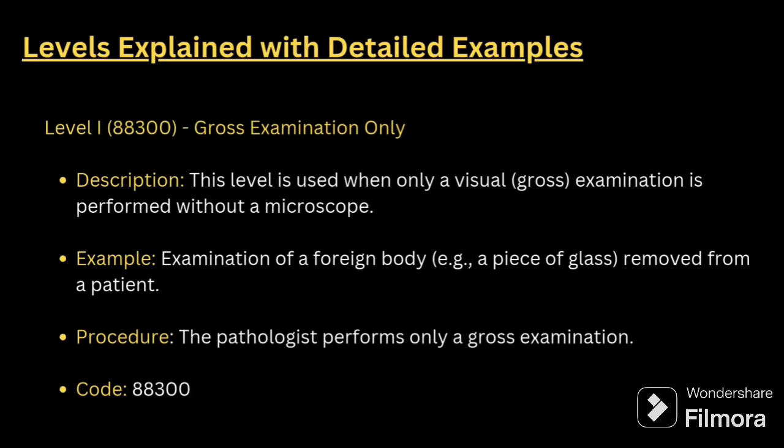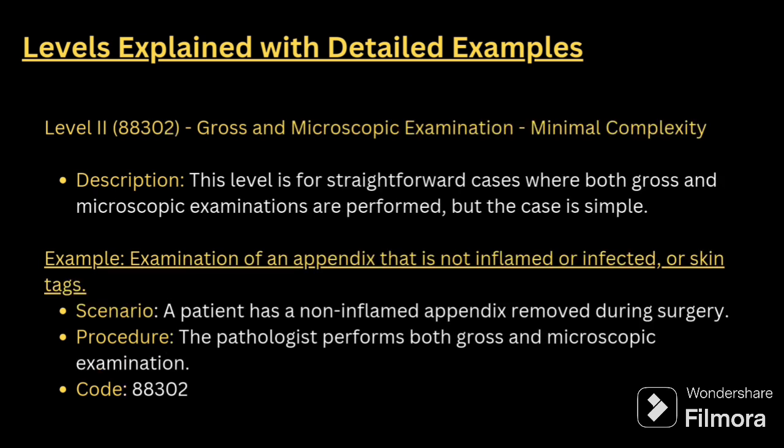Level 1 is 88300 — gross examination only — where visual inspection without a microscope is done. An example would be examination of a foreign body removal, which comes under gross examination, that is viewing with the eyes.